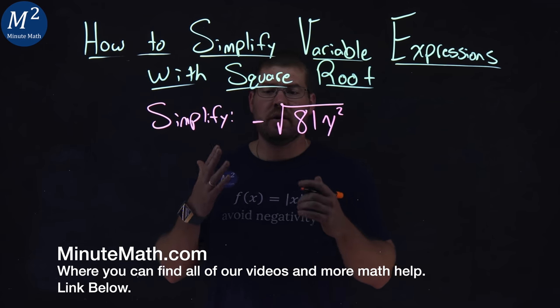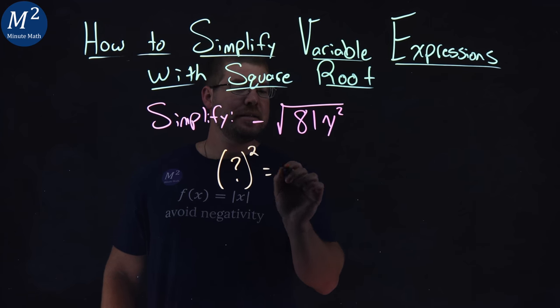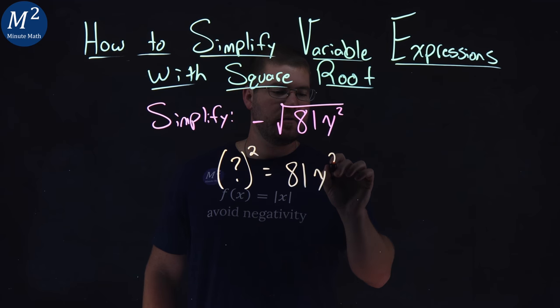And we usually have to ask ourselves this question. Okay, what squared is equal to what's on the inside of the square root? 81y squared.